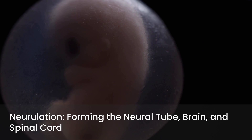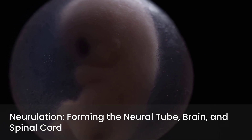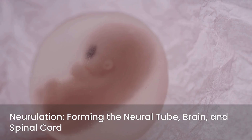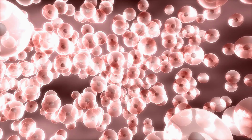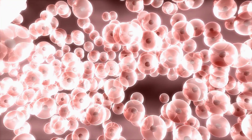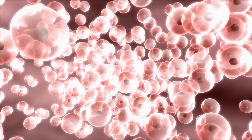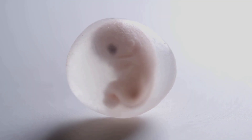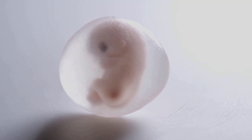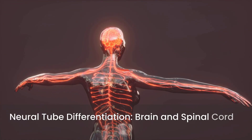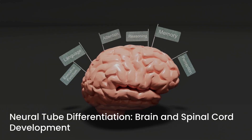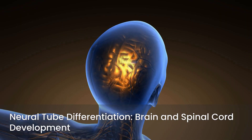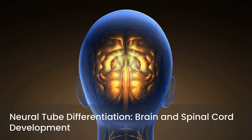Neurulation is the process by which the neural plate folds to form the neural tube, which subsequently develops into the brain and spinal cord. This critical event begins during the fourth week of development and is highly susceptible to disruption. The development of the neural tube involves the induction of the ectoderm by the underlying notochord, leading to the formation of the neural plate. The plate then folds, and its edges fuse to create the neural tube. Defects in this fusion process lead to neural tube defects. The cranial end expands to form the brain vesicles, while the caudal portion forms the spinal cord.